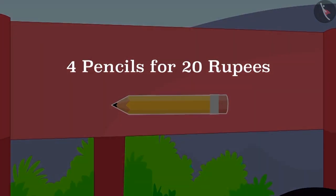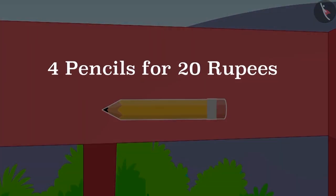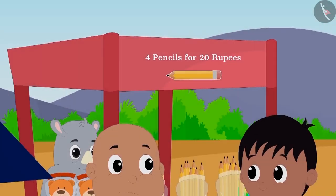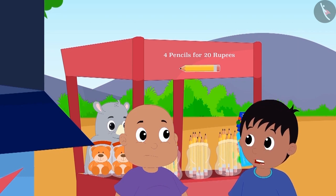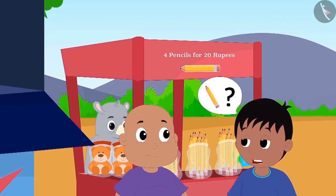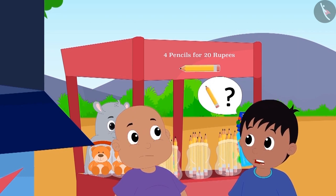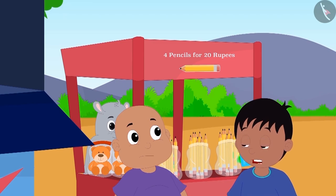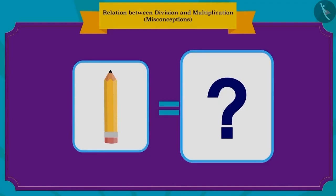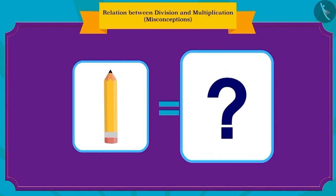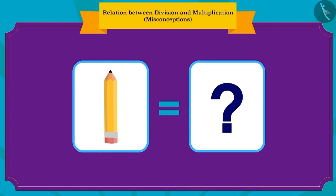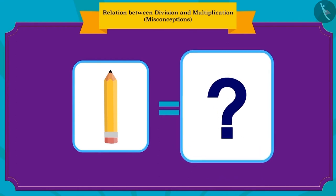Raju read what was written on Gagu's shop front: four pencils for 20 rupees. He asked Bablu how much would they have to pay if they wanted to buy one pencil. Children, can you tell how much Raju and Bablu would need to pay for one pencil?